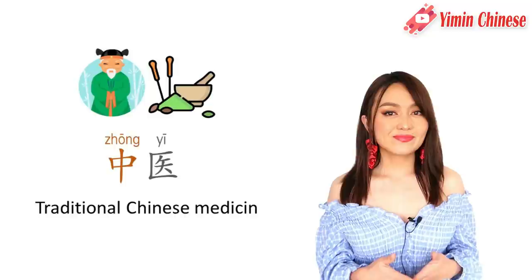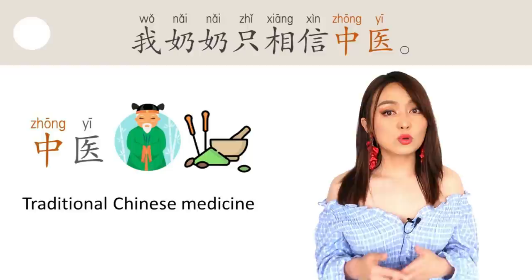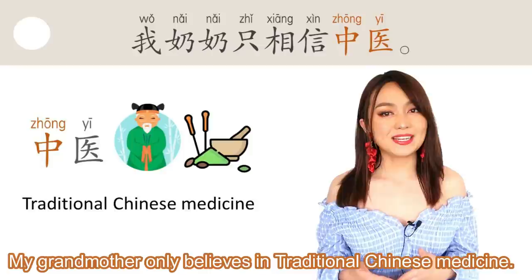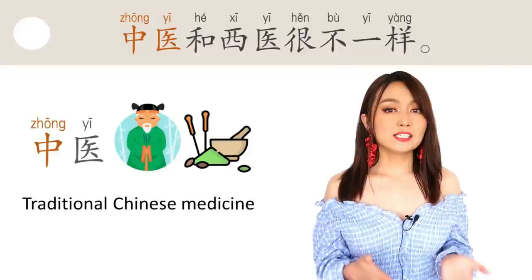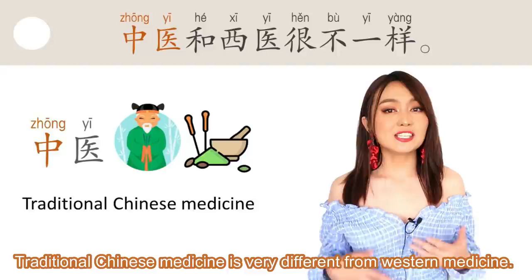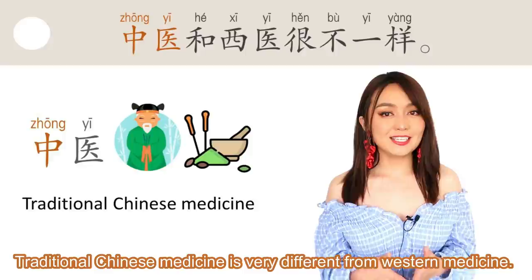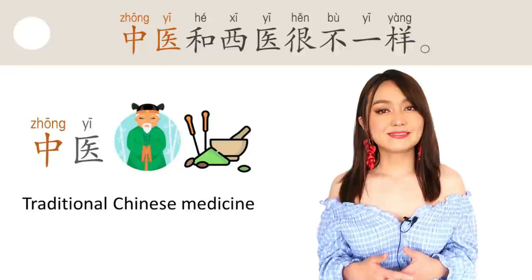OK, next one: 中医, traditional Chinese medicine. 比如说：我奶奶只相信中医。 My grandmother only believes in traditional Chinese medicine. 中医和西医很不一样。 Traditional Chinese medicine is very different from Western medicine.